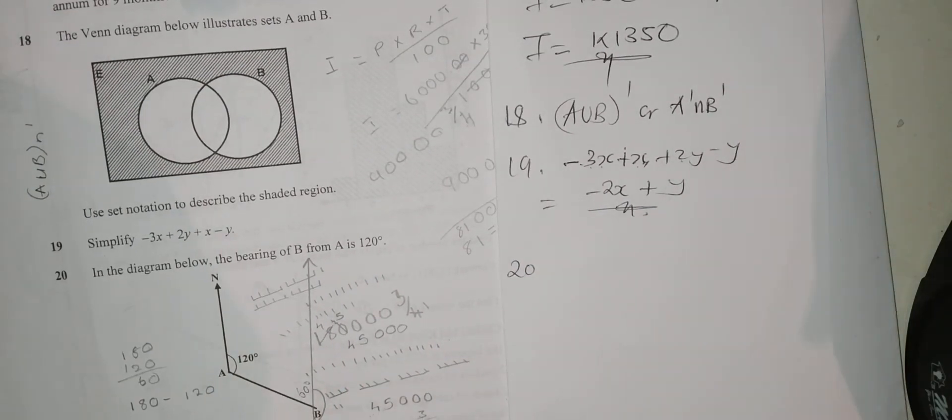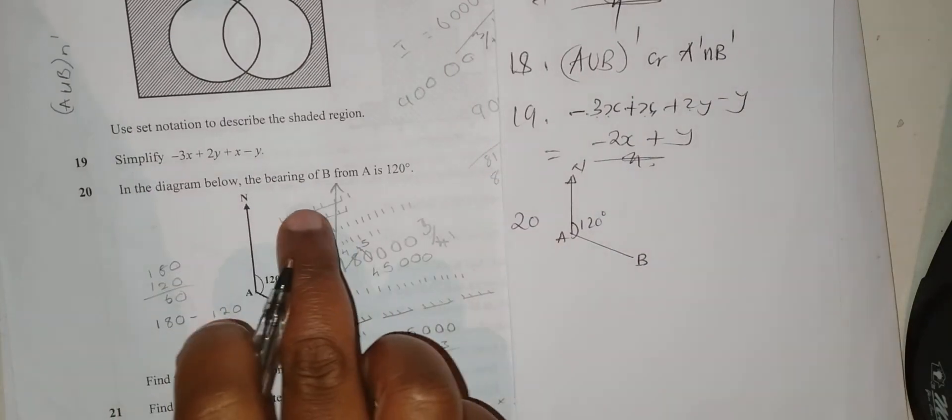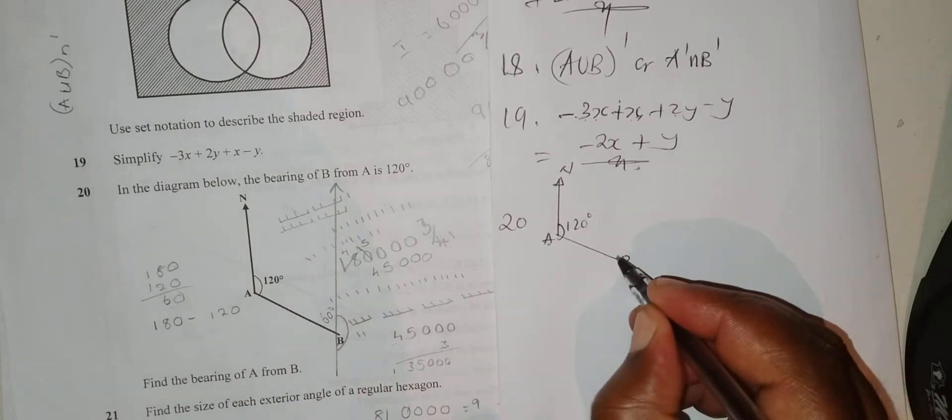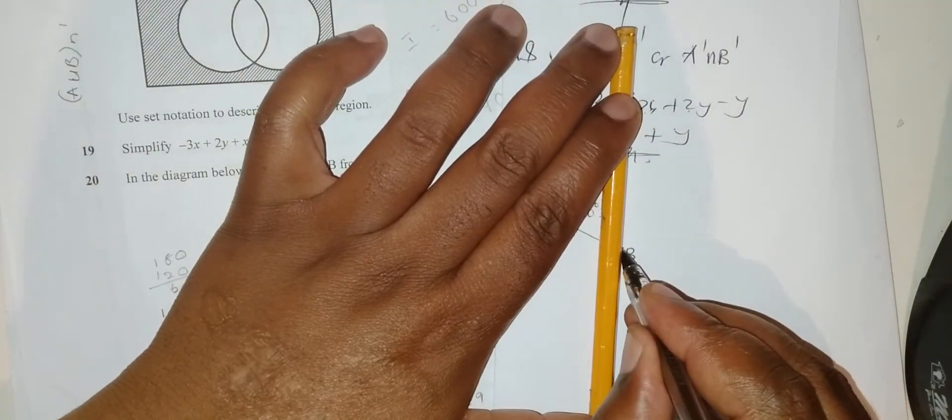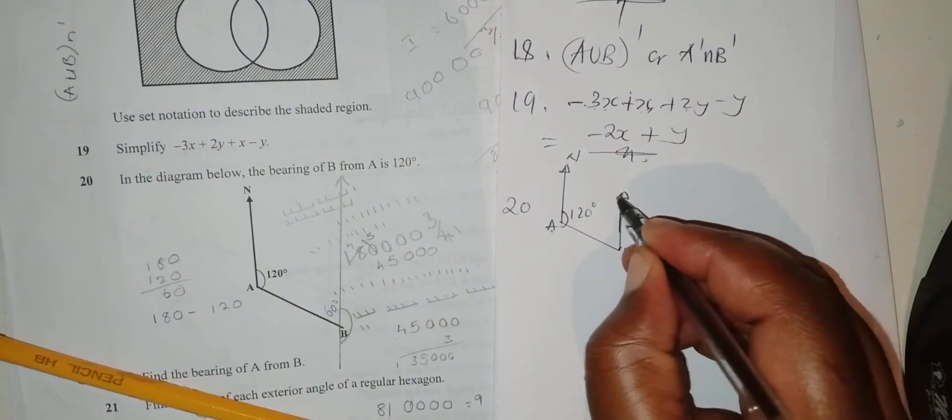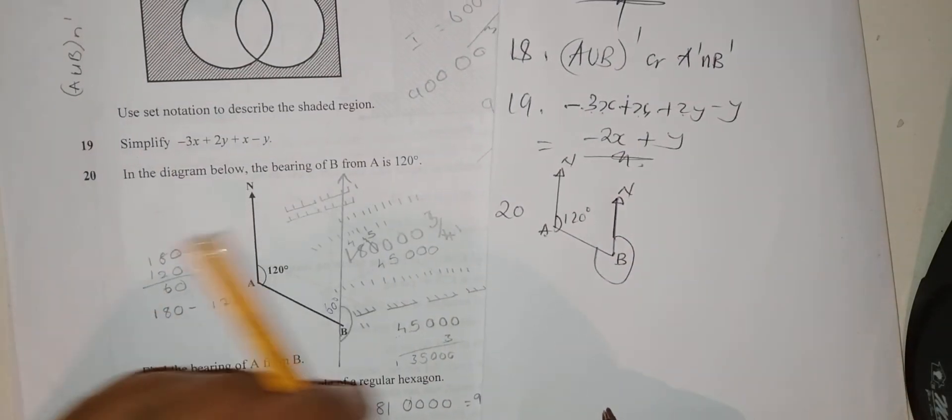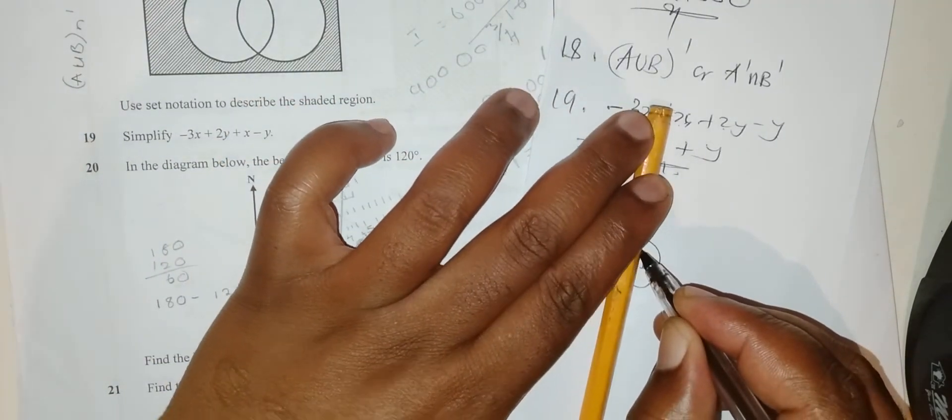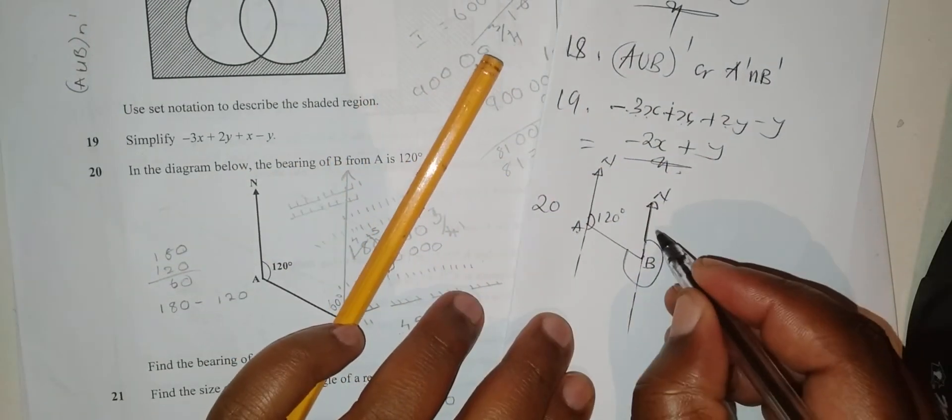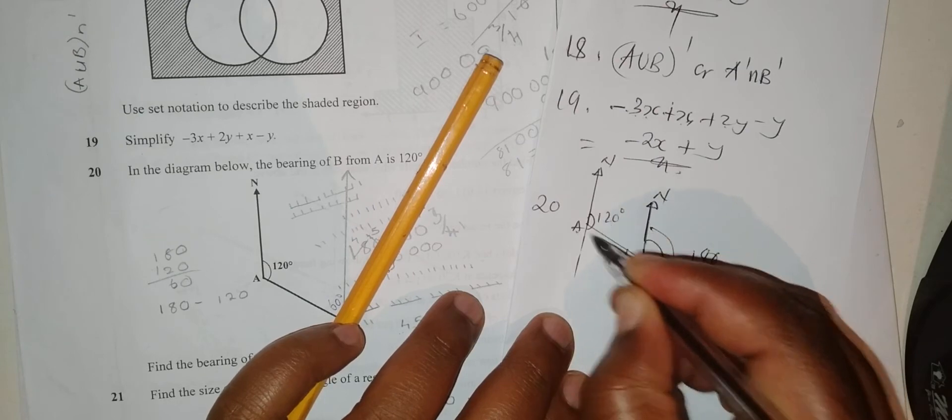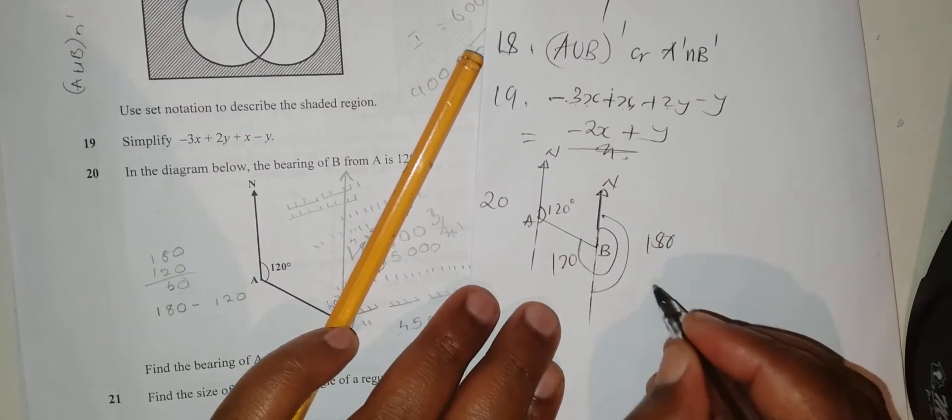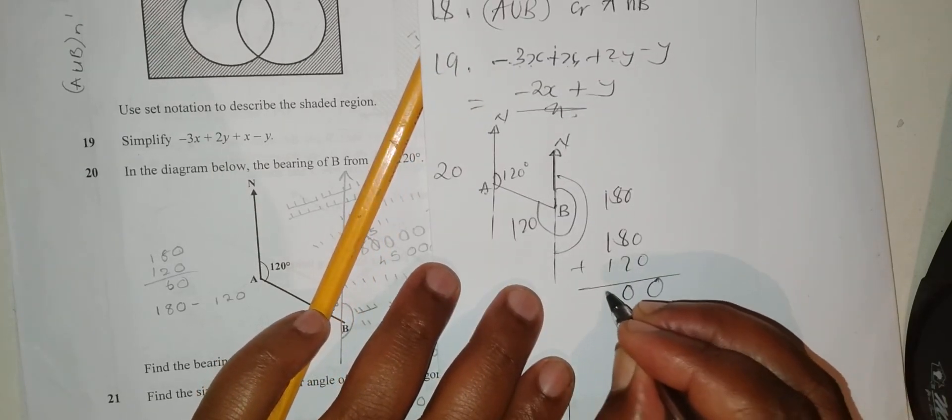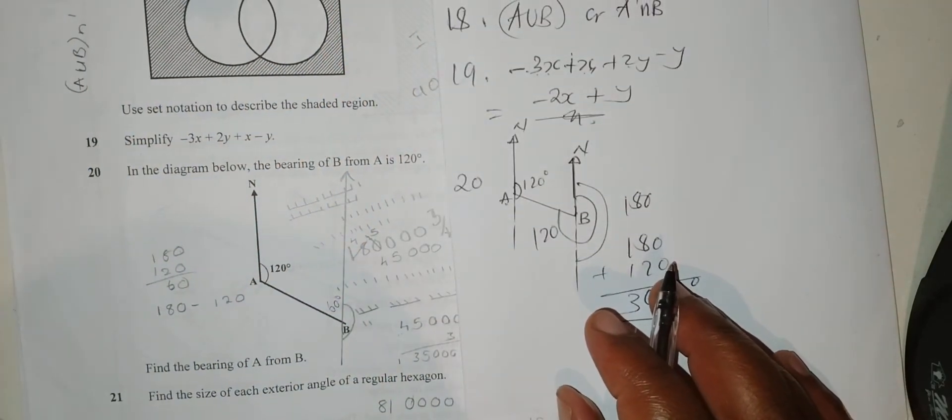Question 20: In the diagram below, the bearing of B from A is 120 degrees. Find the bearing of A from B. Come to B here, draw a north pole, then move from here coming there. We can extend this and here you extend. The whole lot of this one is 180, but this is 120 because they are alternate. So your bearing is 180 plus 120, which is 300 degrees.